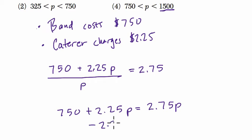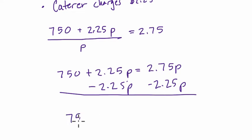Solving for P, I subtract $2.25P from both sides. And what we get is $750 equals $0.50 per person. And we divide both sides by a half.